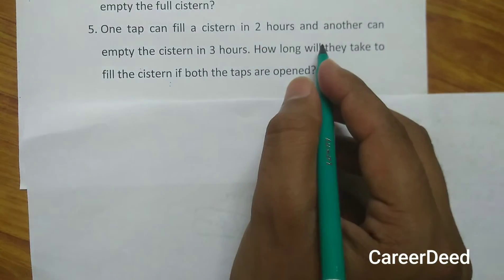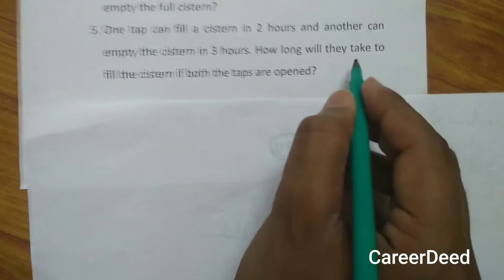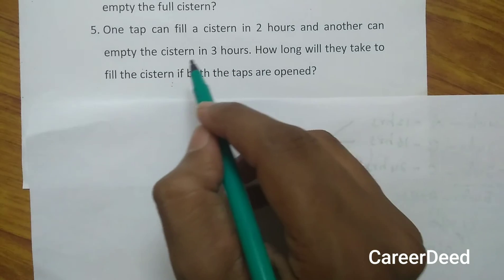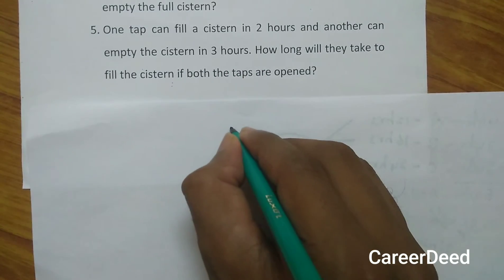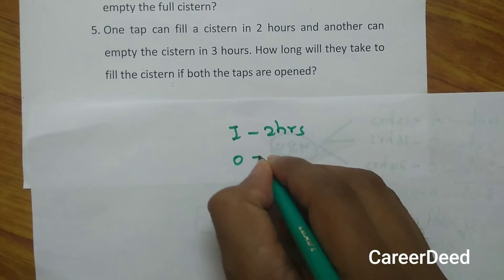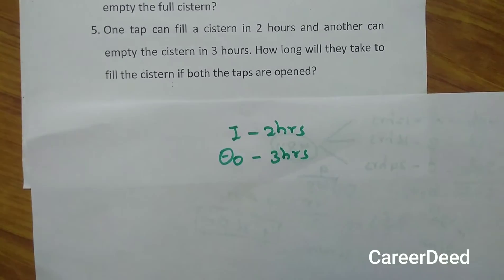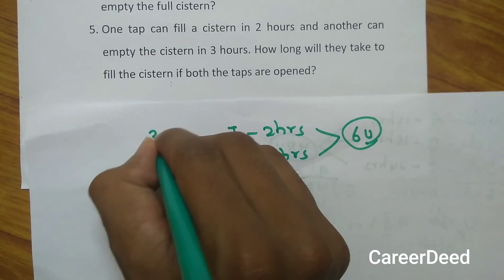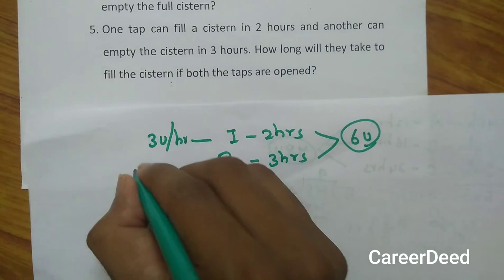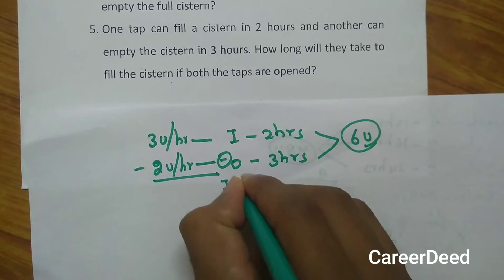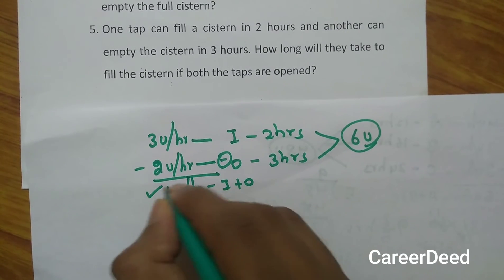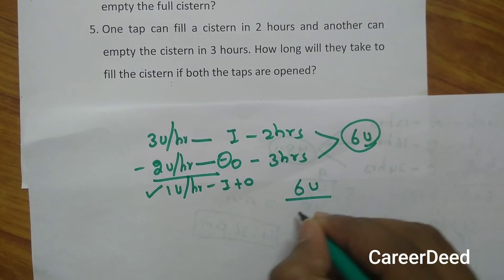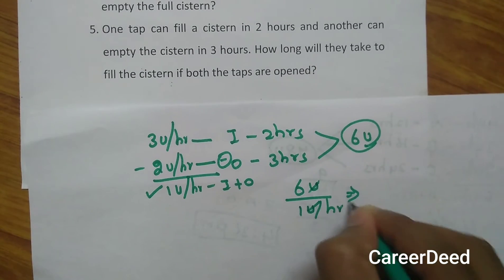Question number 5: one pipe can fill a cistern in 2 hours and another can empty it in 3 hours. How long will they take to fill the cistern if both taps are open? We treat the filling pipe as the inlet and the draining pipe as the outlet. Taking the LCM of 2 and 3 gives 6 units as the total capacity. The inlet fills 3 units per hour and the outlet empties 2 units per hour. Together they fill 3 − 2 = 1 unit per hour, so the cistern fills in 6 ÷ 1 = 6 hours.